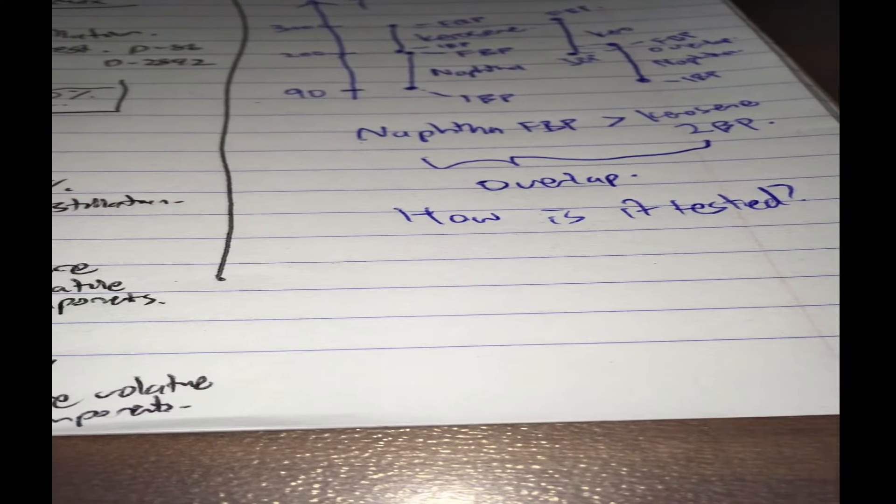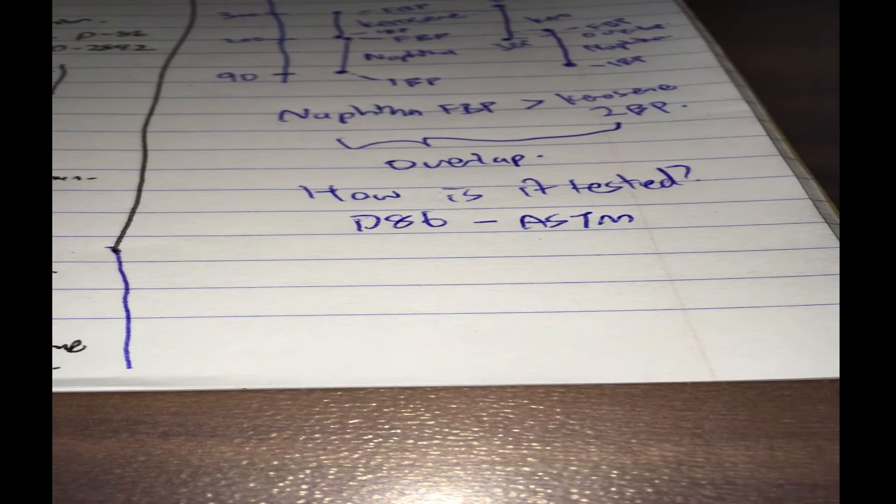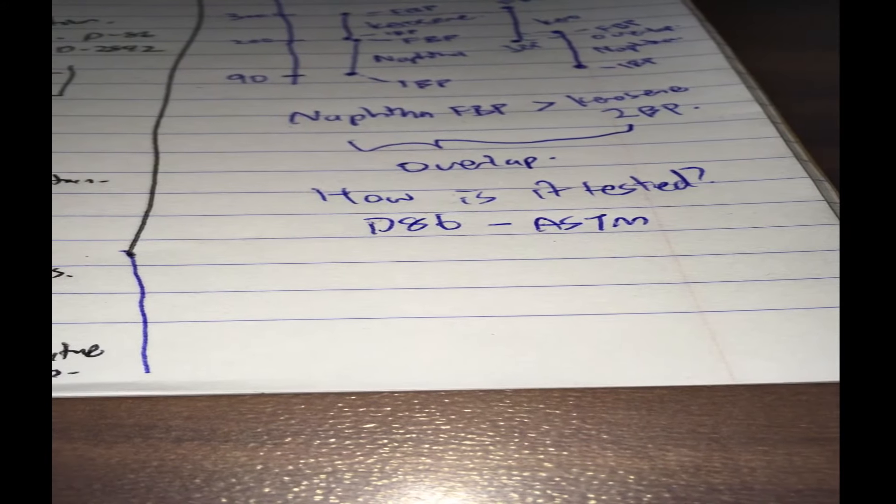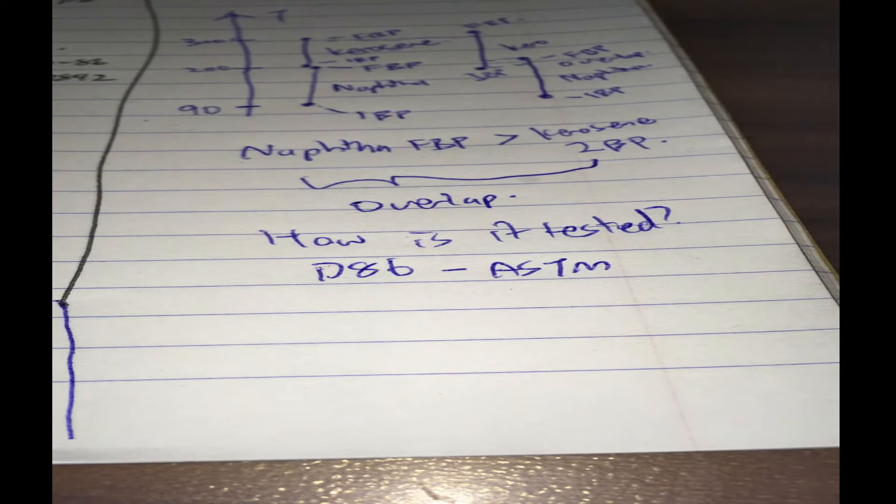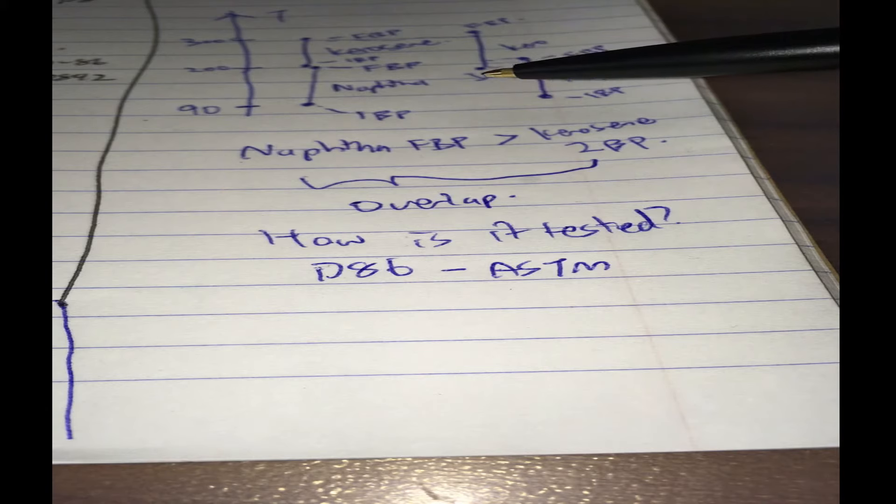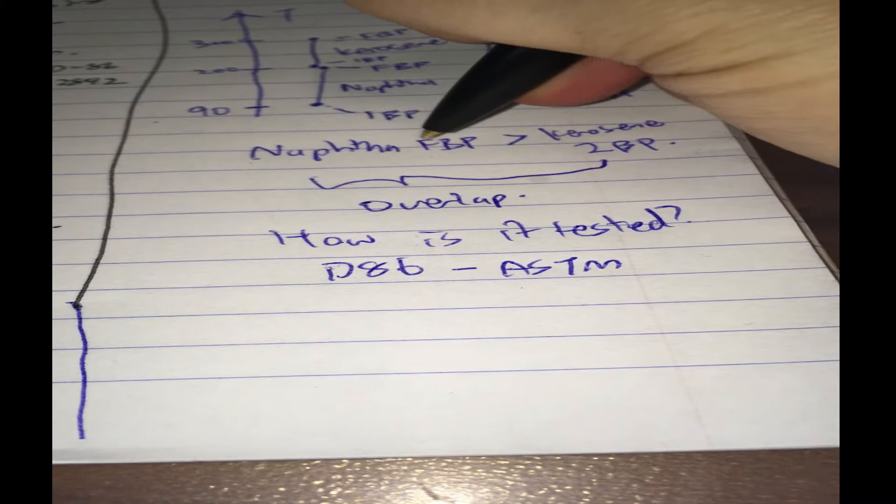Well to ensure that product quality is maintained and there's no such overlap, people use the D86 test, otherwise the ASTM D86 test. This is one of the standard distillation tests elaborated on before in another video. But basically the idea is the same, except instead of using the actual final boiling point and initial boiling point, the ASTM D86 test is frequently - the points for 95% and 5% of the ASTM D86 test are used.